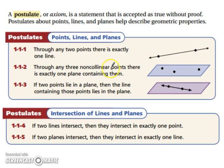Through any three non-collinear points, there is exactly one plane containing them. So if you have three points and they don't make a line, then they make a plane.